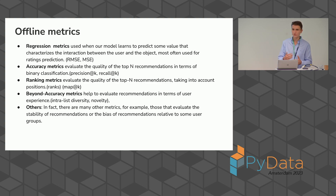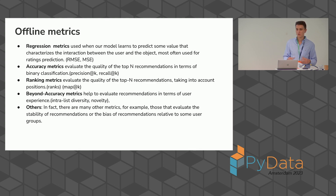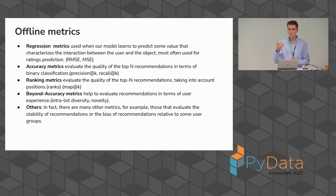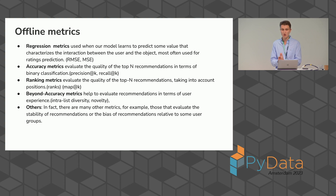It could be regression metrics if we try to predict rank, or accuracy metrics if we evaluate the quality of top-N recommendations in terms of binary classification. Usually, we use ranking metrics to evaluate the quality of top-N recommendations taking into account positions — for example, Mean Average Precision or NDCG. But another question is: if we use only regression, accuracy, or ranking metrics, it's not enough. We also need to think about beyond-accuracy metrics.